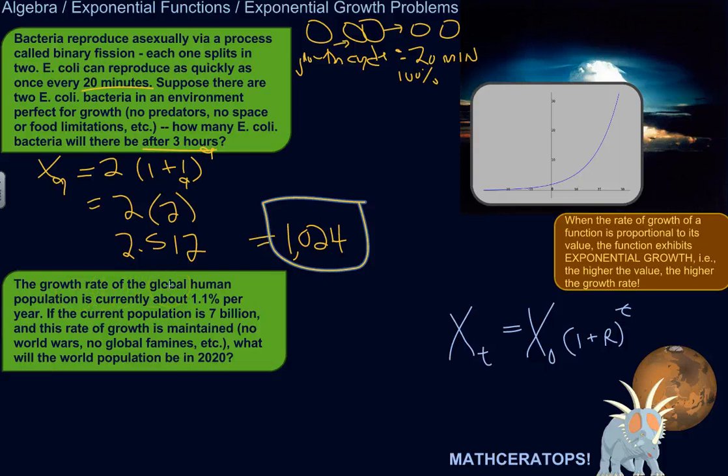All right. The growth rate of the global human population is currently about 1.1% per year. Okay, true story. If the current population is 7 billion and this rate of growth is maintained, we're going to assume that the growth rate would be 1.1% for the indefinite future. Like, there's no world wars, no global famines, nothing that would drastically affect this growth rate. What will the world population be in 2020? So our growth cycle will be one year.